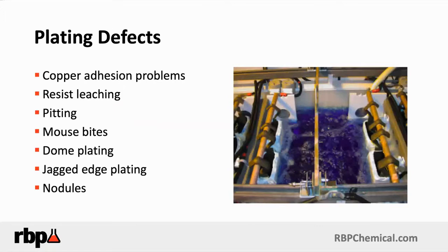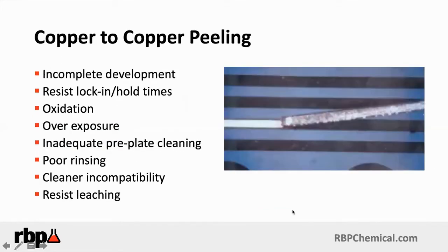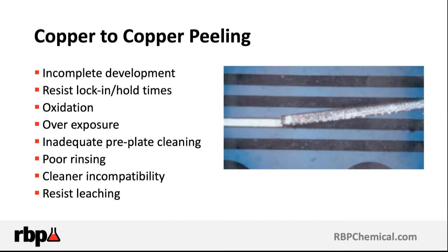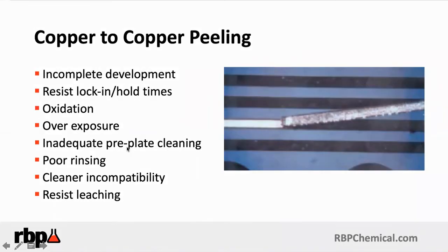Plating defects — such as dome plating, jagged edge plating — will be discussed in the future. But today I really want to focus on copper adhesion problems and pitting. Copper-to-copper peeling is a very disconcerting situation if it happens. You've already put a lot of money, time, and effort to fabricate the circuit board. You come out of your electroless or electrolytic copper plating process and find that the plated copper peels from either the laminate surface or from the electroless surface. At that point, it's very difficult to rework the board, and most likely it will be scrapped.